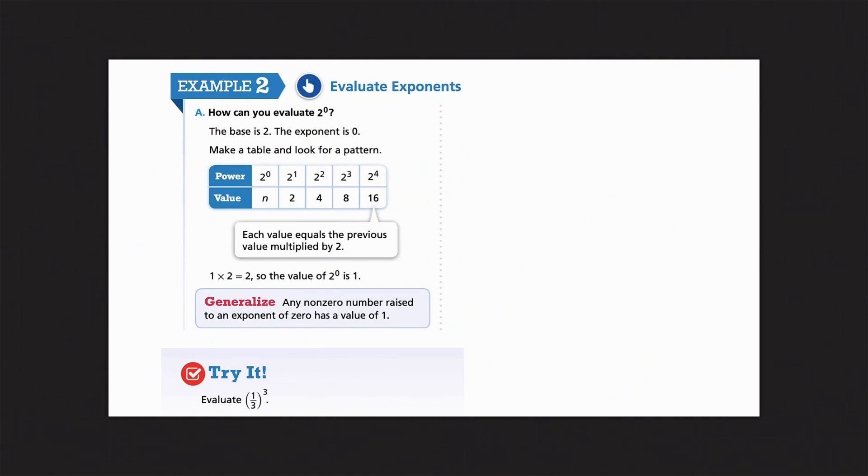All right. Looking at example 2, we're going to evaluate exponents. Evaluate is just another word for solve, trying to finish the problem. So, this one says, how can you evaluate 2 to the 0 power? Well, here we can see the base is 2 and the exponent is 0, the little number there up in the sky.